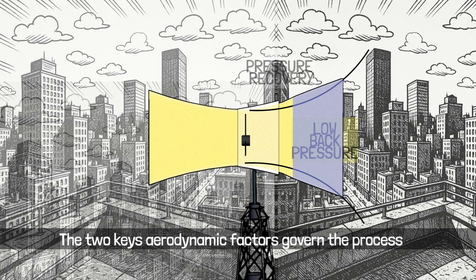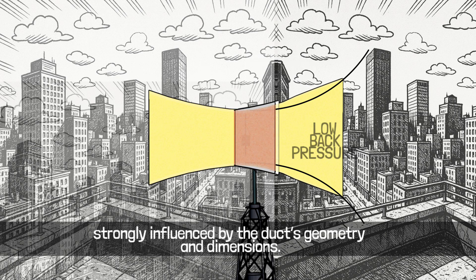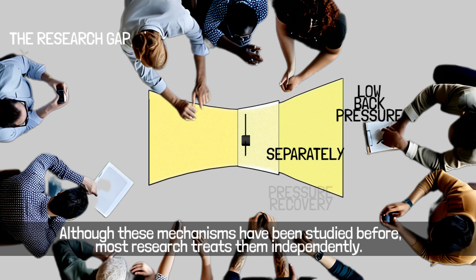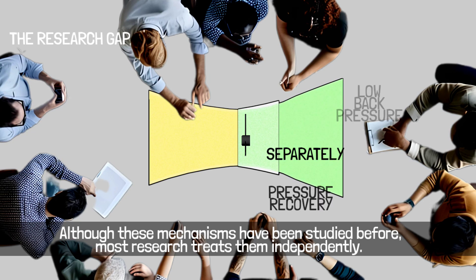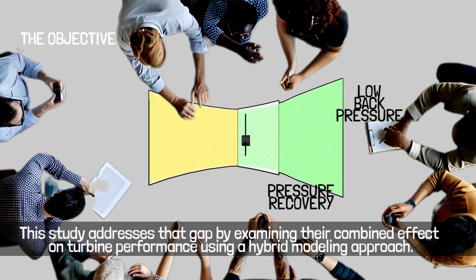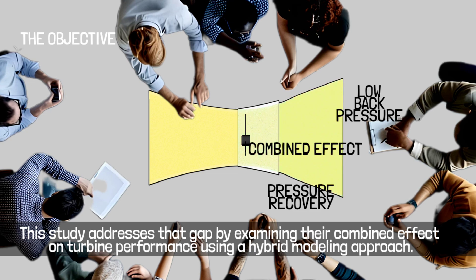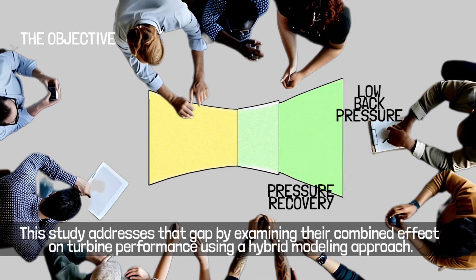These two key aerodynamic factors — pressure recovery and back pressure — are strongly influenced by the duct's geometry and dimensions. Although these mechanisms have been studied before, most research treats them independently. This study addresses that gap by examining their combined effect on turbine performance using a hybrid modeling approach.